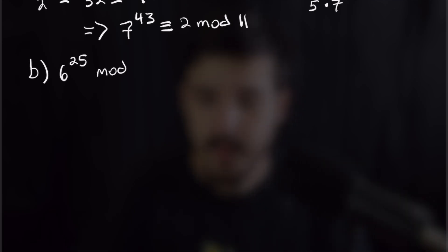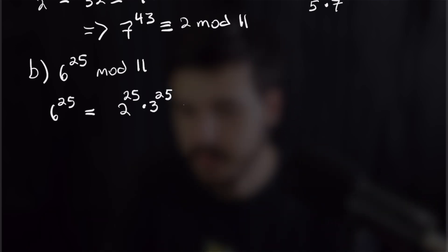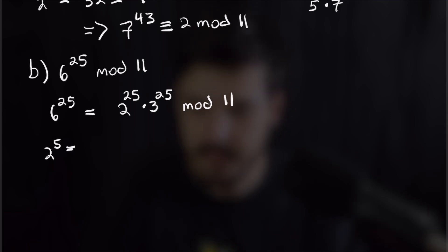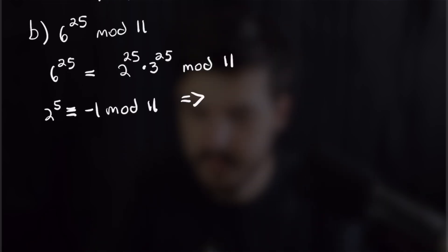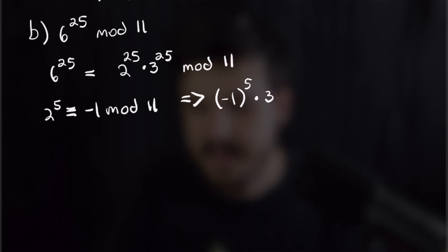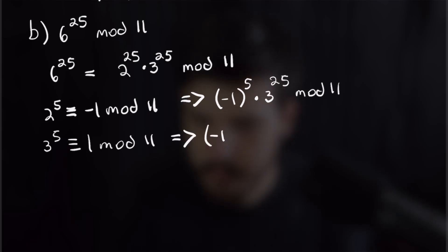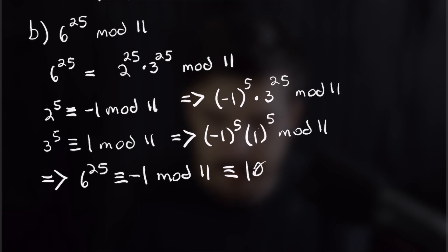For part b we have 6 to the 25th mod 11. I broke it up into 2 to the 25th times 3 to the 25th, since reducing 2 and 3 separately is easier. Since 2 to the 5th is congruent to negative 1 mod 11, 2 to the 25th is negative 1 to the 5th, which is negative 1. Then 3 to the 5th is congruent to 1 mod 11, so all the powers of 3 cancel, leaving us with negative 1 mod 11, which is congruent to 10 mod 11.